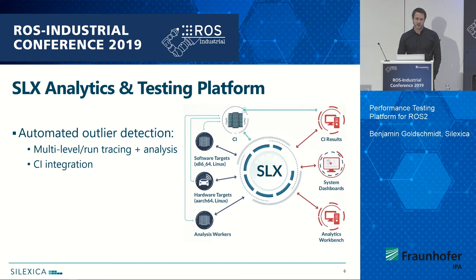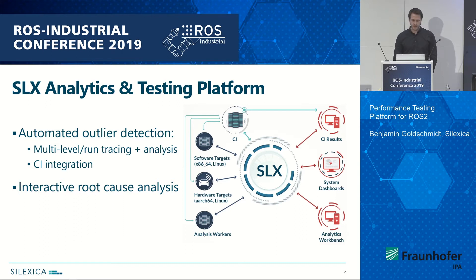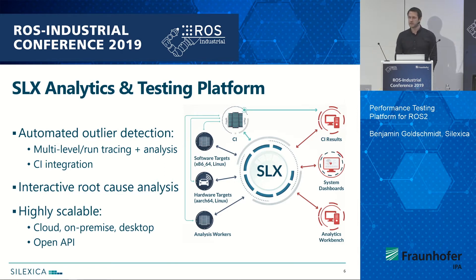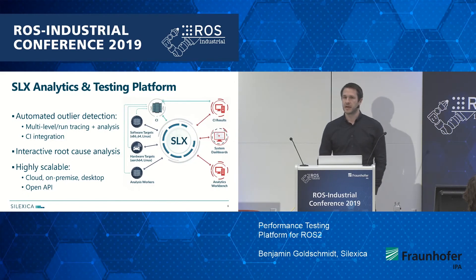What we want to do is automatically detect outliers in your software. We also provide interactive root cause analysis — I'll have an example later to illustrate how you can quickly find problems without having to reproduce them on your own computer. And very importantly, high scalability: you can run this in a cloud, on premise, or on your regular computer. We also provide an open API — you can use it from the command line, script it, everything is documented, and you can use it however you want.